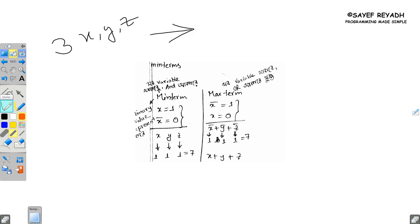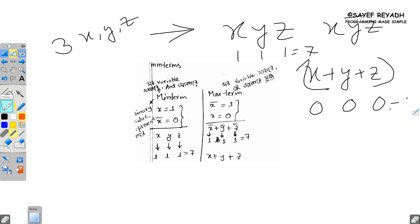So in minterm, the maxterm is x plus y plus z. The minterm is basic. The minterm is x, y, z. So for minterm, x equals 1, x bar equals 0, and for maxterm, x bar equals 1, x equals 0.